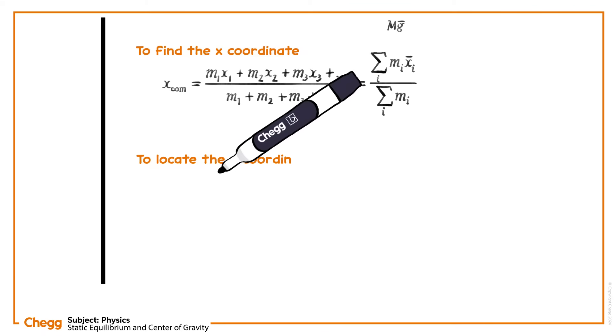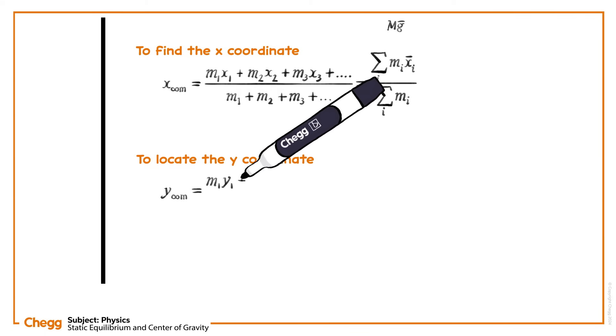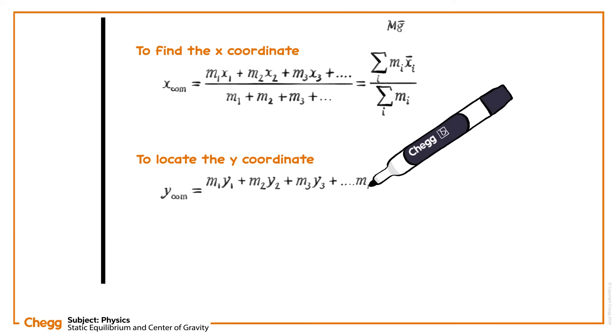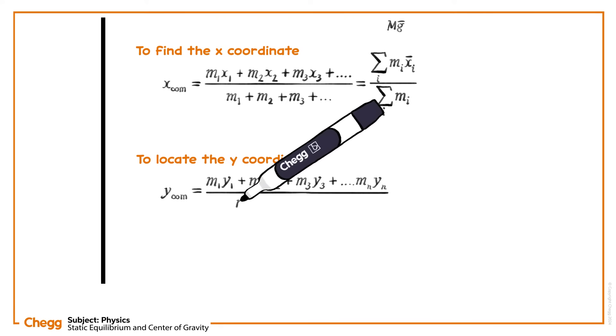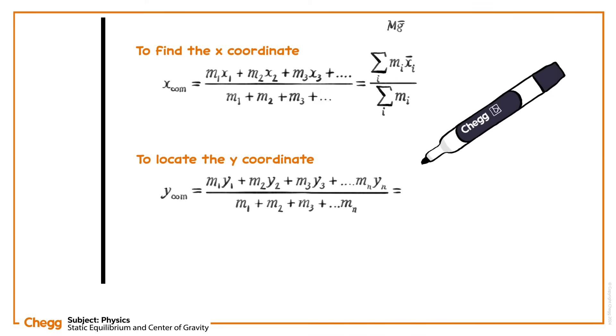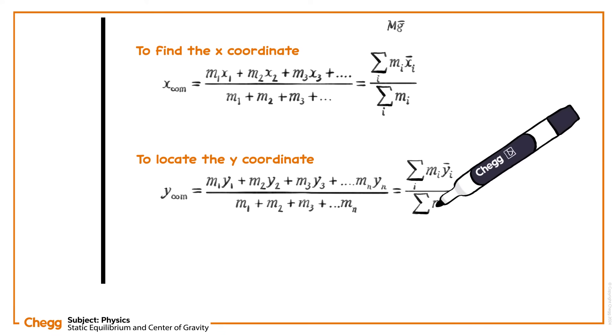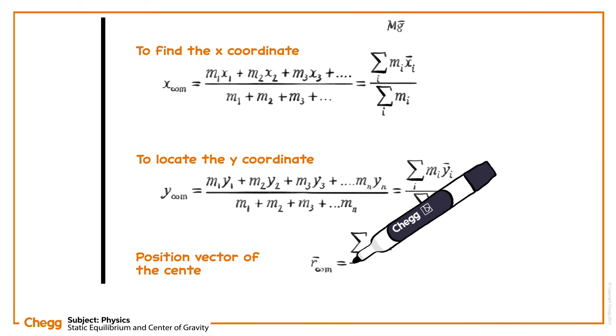To locate the y-coordinate, use the same formula but replace x with y. The sum of mass times y-coordinate of each particle divided by the sum of masses. Put the two coordinates together and you have the position vector of the centre of mass.